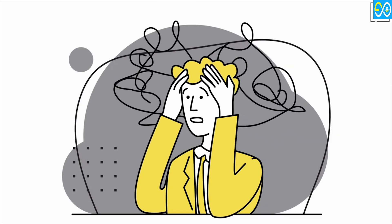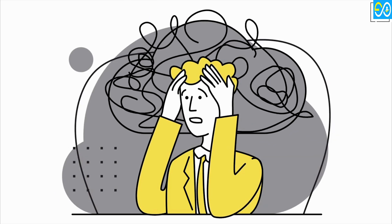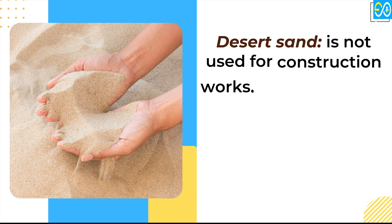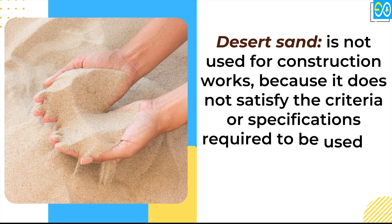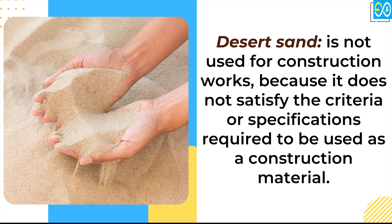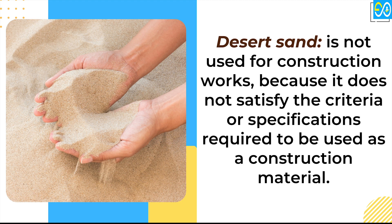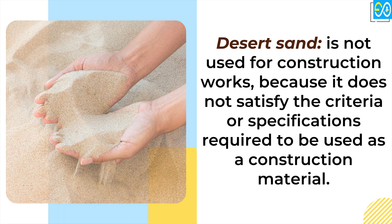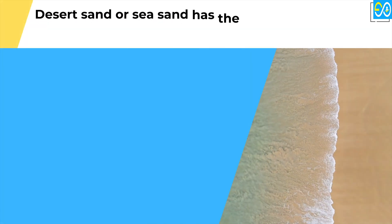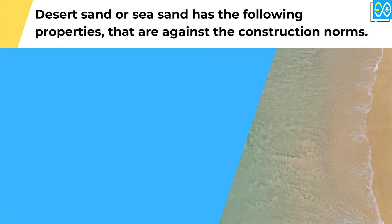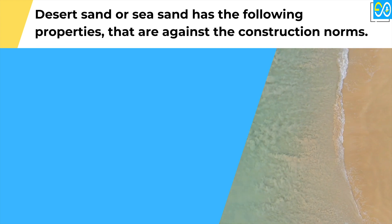Why desert sand and sea sand are not used for construction. Desert sand is not used for construction works because it does not satisfy the criteria or specifications required to be used as a construction material. Desert sand or sea sand has the following properties that are against the construction norms.